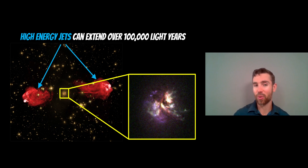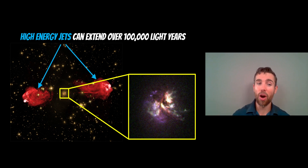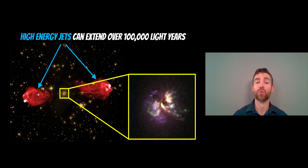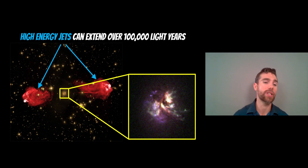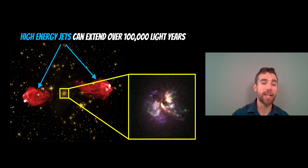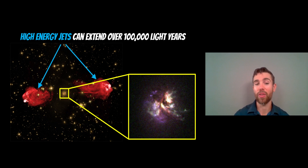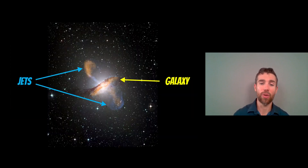These jets can extend over hundreds of thousands of light years away from the black hole at the centre. The zoomed-in section shown is the actual galaxy itself, and the regions on either side are those high energy jets. The jets are significantly larger and a lot brighter than the actual galaxy. The jets are imaged in the radio part of the spectrum, whereas the galaxy is in the optical — but the total energy emitted by them is significantly more than the central galaxy. In another image you can see the galaxy edge-on with jets coming out perpendicular to it.